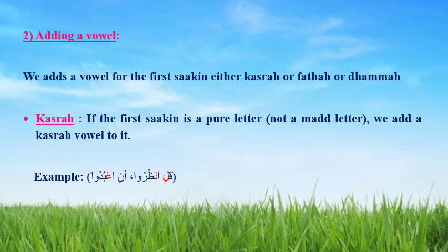The second method is adding a vowel. We add a vowel to the first sakin — either kasra, fatha, or dhamma. We add kasra if the first sakin is a pure letter, not a madda letter. For example, the first sakin is a pure letter — the lam and the nun. And there is another sakin in the next word. So we add kasra to the first sakin. We say the word with kasra, because the first sakin is a pure letter, not a madda letter.